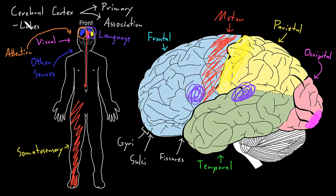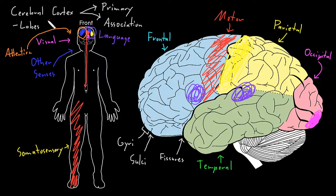There's a lot more to talk about in terms of the structure and function of the cerebral cortex and how these areas connect to and work with other parts of the nervous system. For example, the motor cortices work with the basal ganglia, some of those deep subcortical cerebral structures, and the cerebellum to perform many different motor functions. But I'll stop there to give a little overview of the structure and some of the functions of the cerebral cortex.